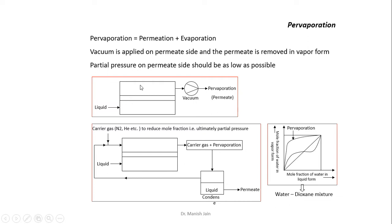This is the permeate side. Once the different components approach the permeate side, they vaporize and come out from the permeate side in vapor form. So it is the combination of two processes: permeation and vaporization.